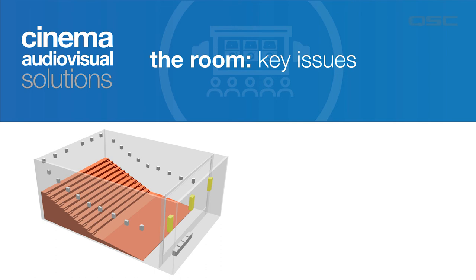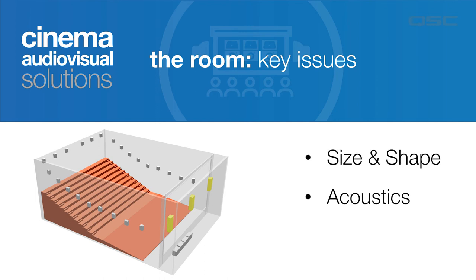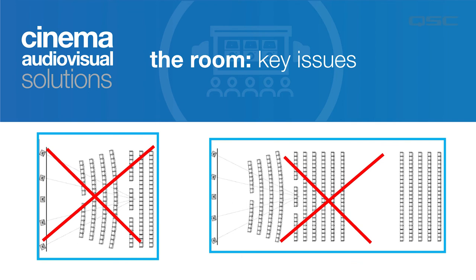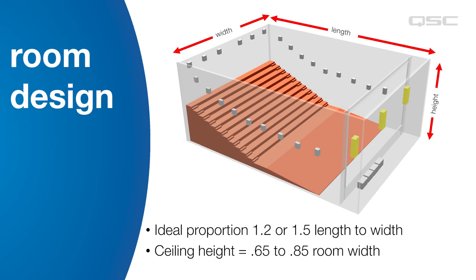Good sound, and image for that matter, in any space starts with the room. The size and shape of the room and its acoustics are two of the most fundamental issues, and they're highly interrelated. The length-to-width proportion has an effect on how reflected sound will sum or cancel in the room. A room with equal proportions is probably the worst shape, followed closely by long narrow rooms. The best room proportions are between 1.2 to 1 up to 1.5 to 1 length to width. For example, a minimum length for a room that's 30 feet wide would be 36 feet, using the 1.2 to 1 ratio.